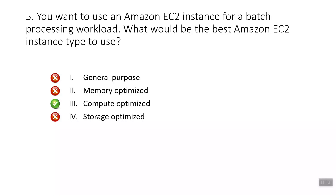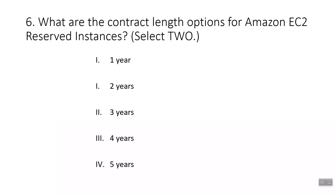What are the contract length options for Amazon EC2 Reserved Instances? The correct answers are one year and three years. AWS offers standard reserved instances for one-year or three-year terms.